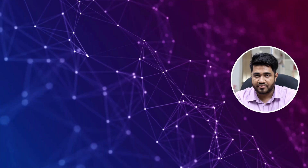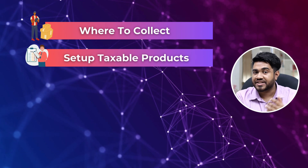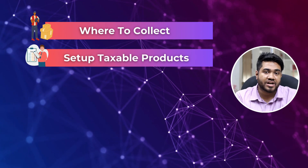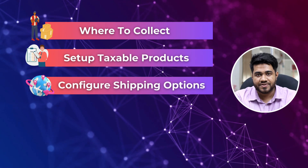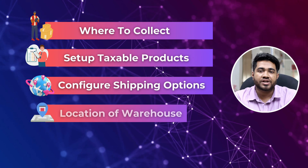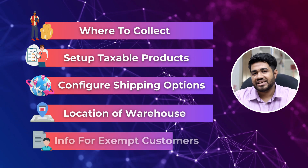To summarize, there are five significant things to set up sales tax for your Shopify store: tell Shopify where to collect, set up taxable products to collect sales tax, configure shipping options, add the location of the warehouse, and add information for exempt customers.